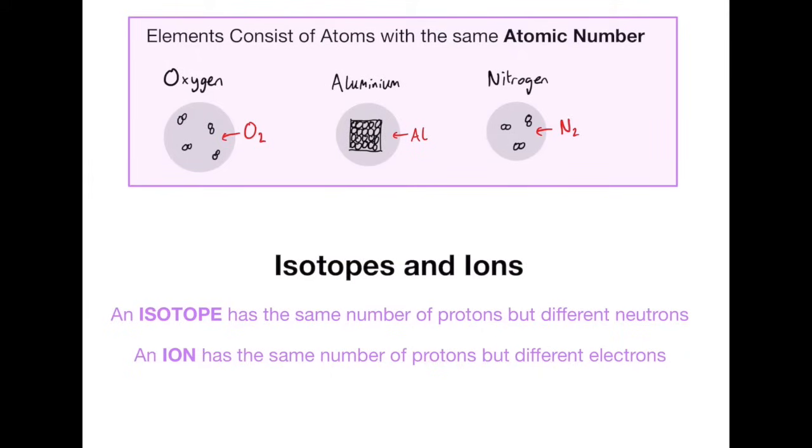Isotopes and ions, very very important definitions. An isotope has the same number of protons but different number of neutrons. An ion has the same number of protons but different electrons. It's always important that you talk about having the same number of protons and then the different of either the neutrons or the electrons for these.